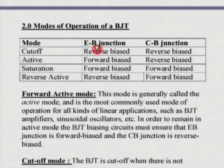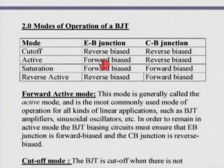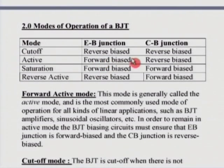Active mode is the most commonly used mode and is the most desirable for amplifiers and other applications. For active mode operation, you need to keep the emitter-base junction forward biased, while the collector-base junction should be reverse biased. In switching applications, you occasionally have the saturation mode also, where both the emitter-base and the collector-base junctions get forward biased.